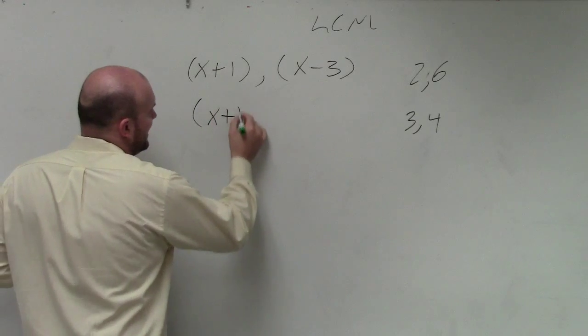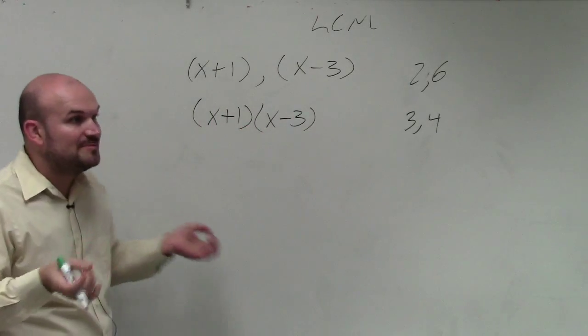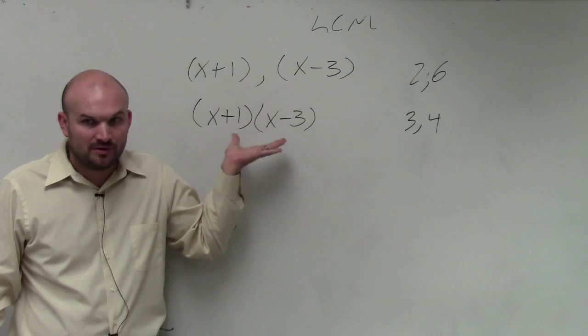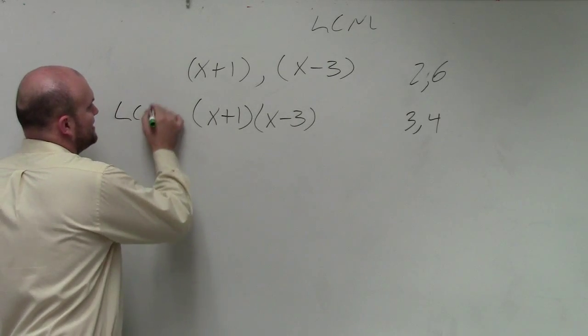So I know that x plus 1 times x minus 3 gives me a common multiple, right? And in this case, this actually is going to also be our least common multiple.